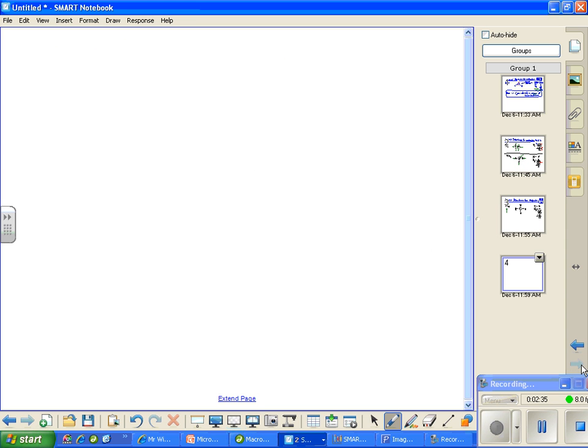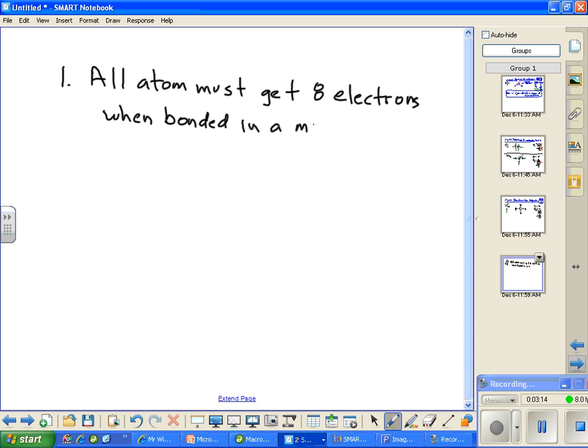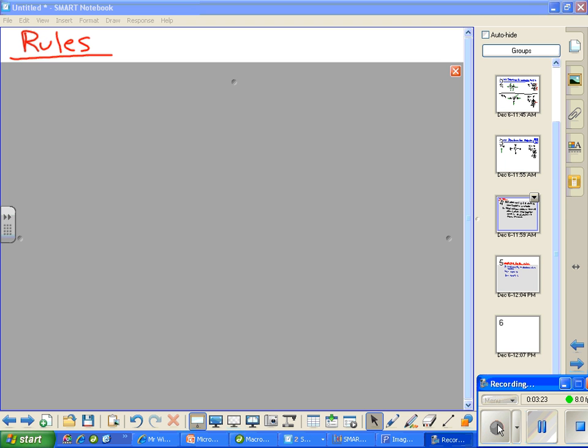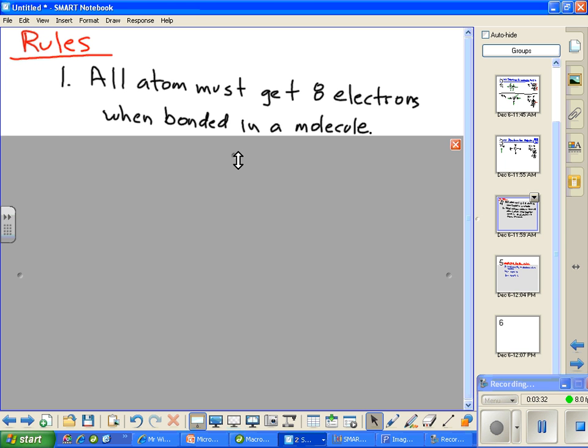Let's go to a clean slate and look at the rules that I've been using. Number one, very important: all atoms must get eight electrons when bonded in a molecule.